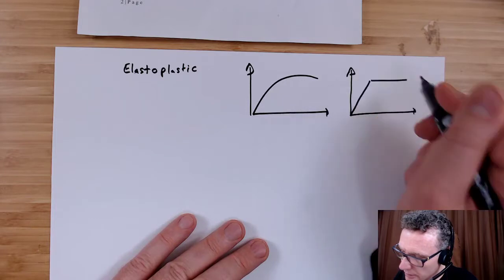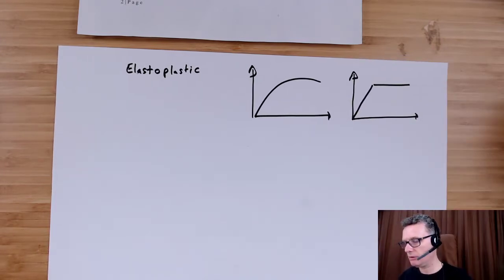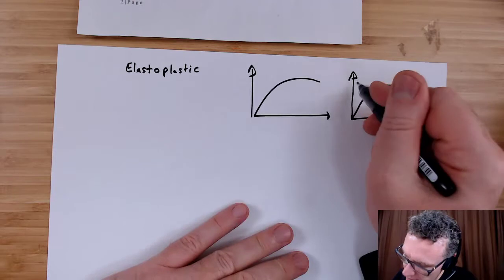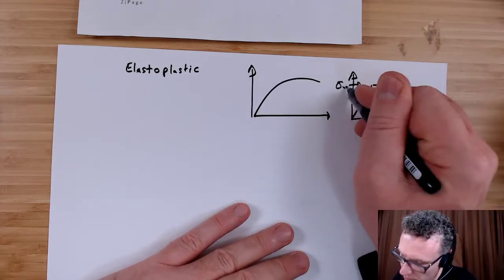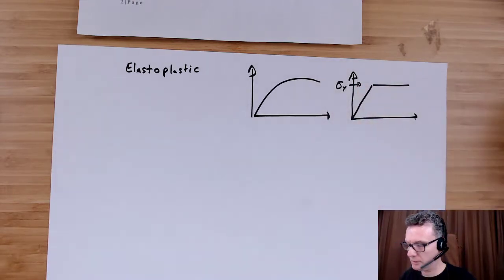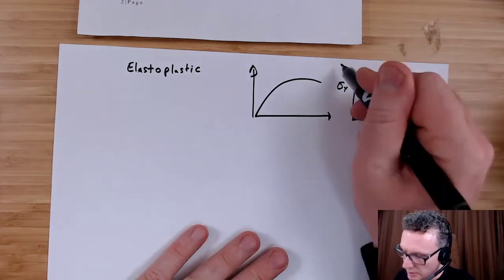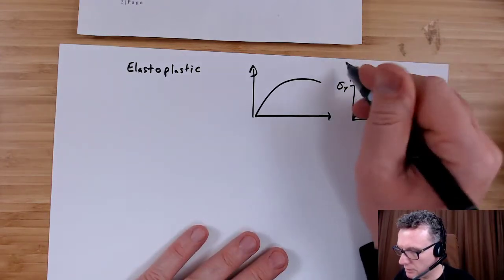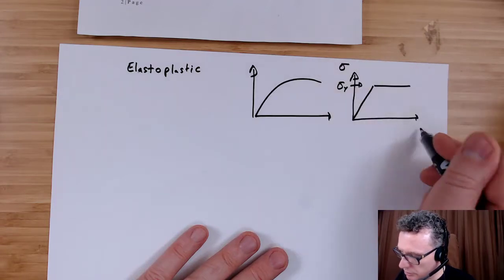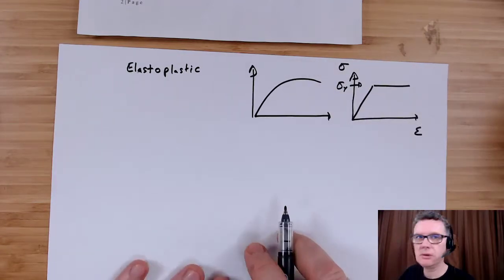A nice straight line and then flat. That's not a bad model. This is obviously going to be your yield stress, and so this is what we're going to do for stress-strain.